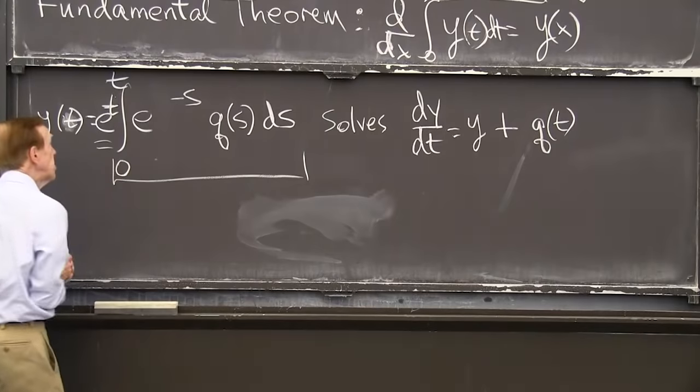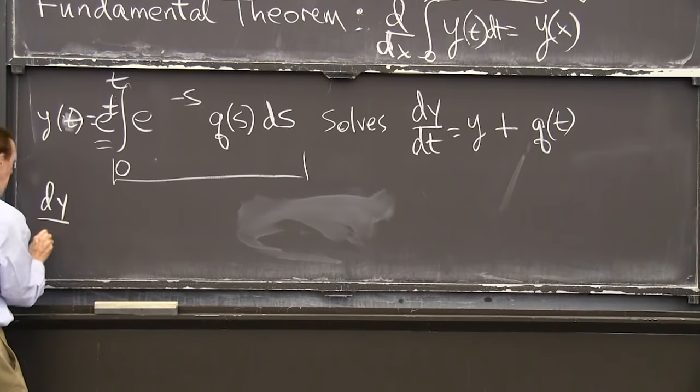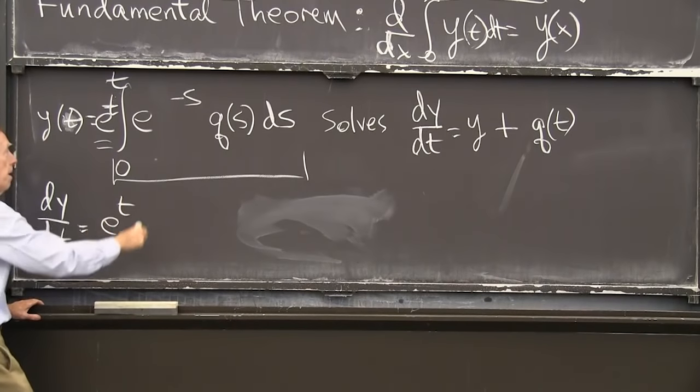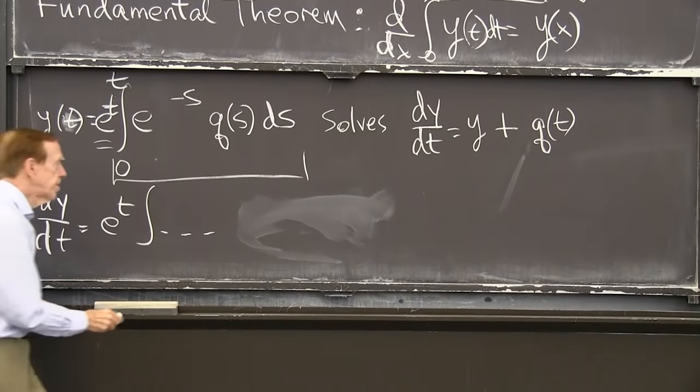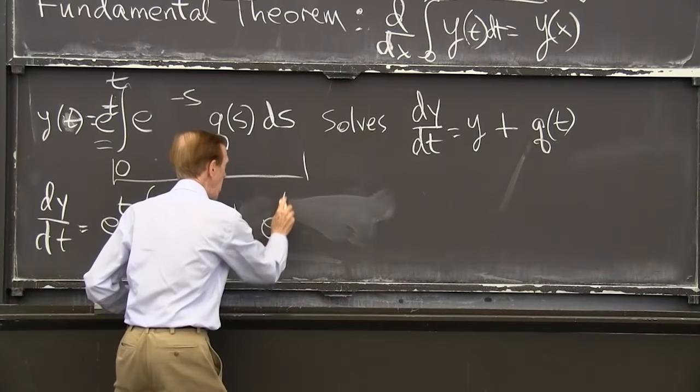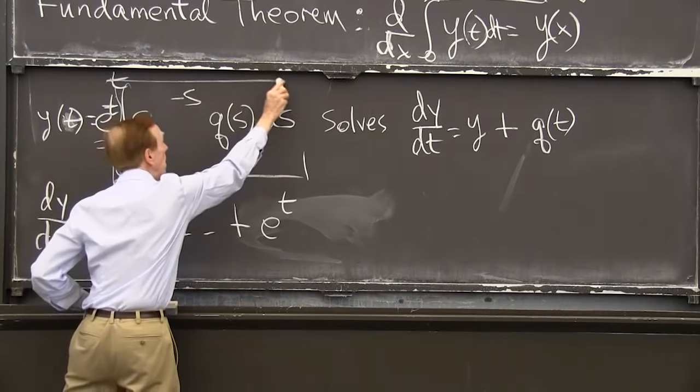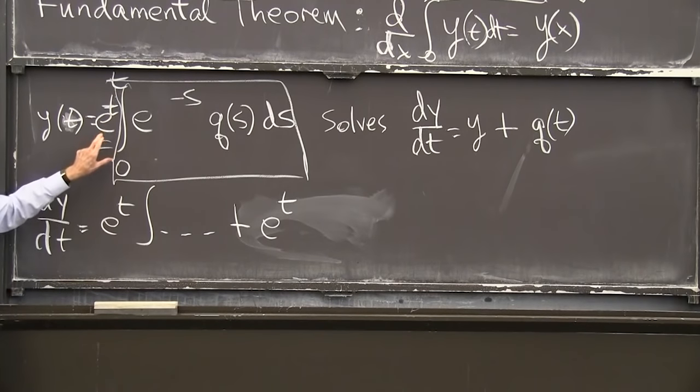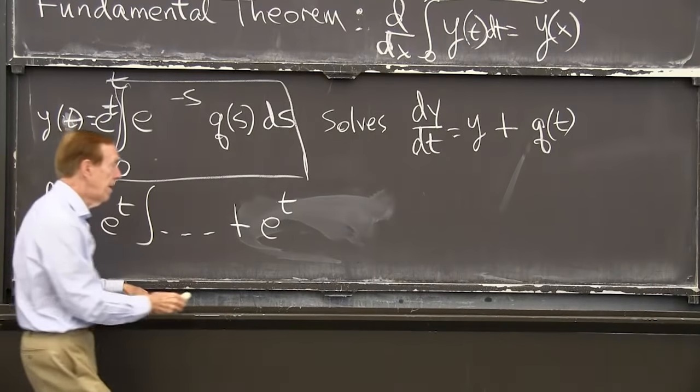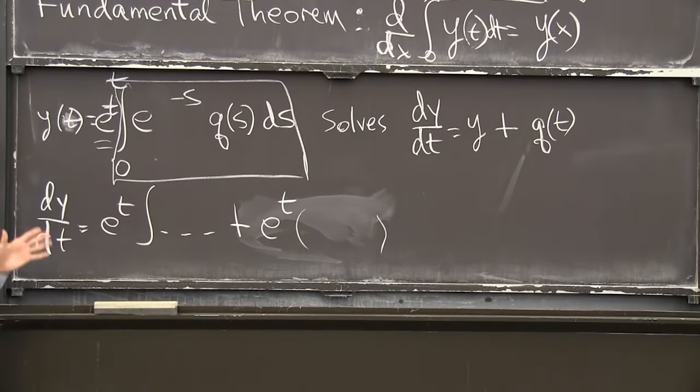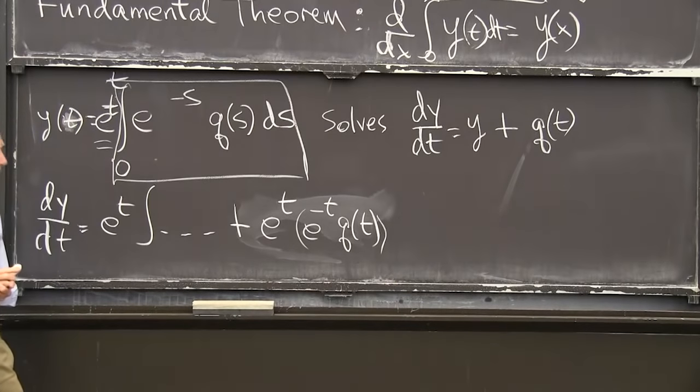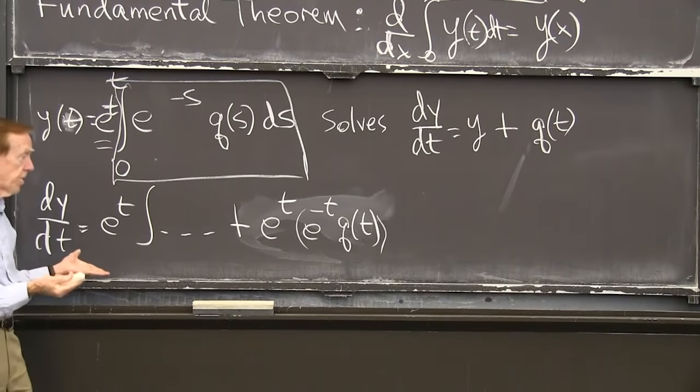I'm going to use the product rule and show that the derivative of that product is one term will be y and the other term will be q. Can I just apply the product rule to this function that I've pulled out of the hat? But you'll see it again. OK, so it's a product of this times this. So the derivative, dy dt is, the product rule says, take the derivative of that. That is e to the t times this, plus the first thing times the derivative of the second. I'm using the product rule. So you have to notice that e to the t came twice because it is there and its derivative is the same. Now, what's the derivative of that? Fundamental theorem of calculus. We've integrated something. I want to take its derivative. So I get that something. I get e to the minus t, q of t. That's the fundamental theorem. Are you good with that?